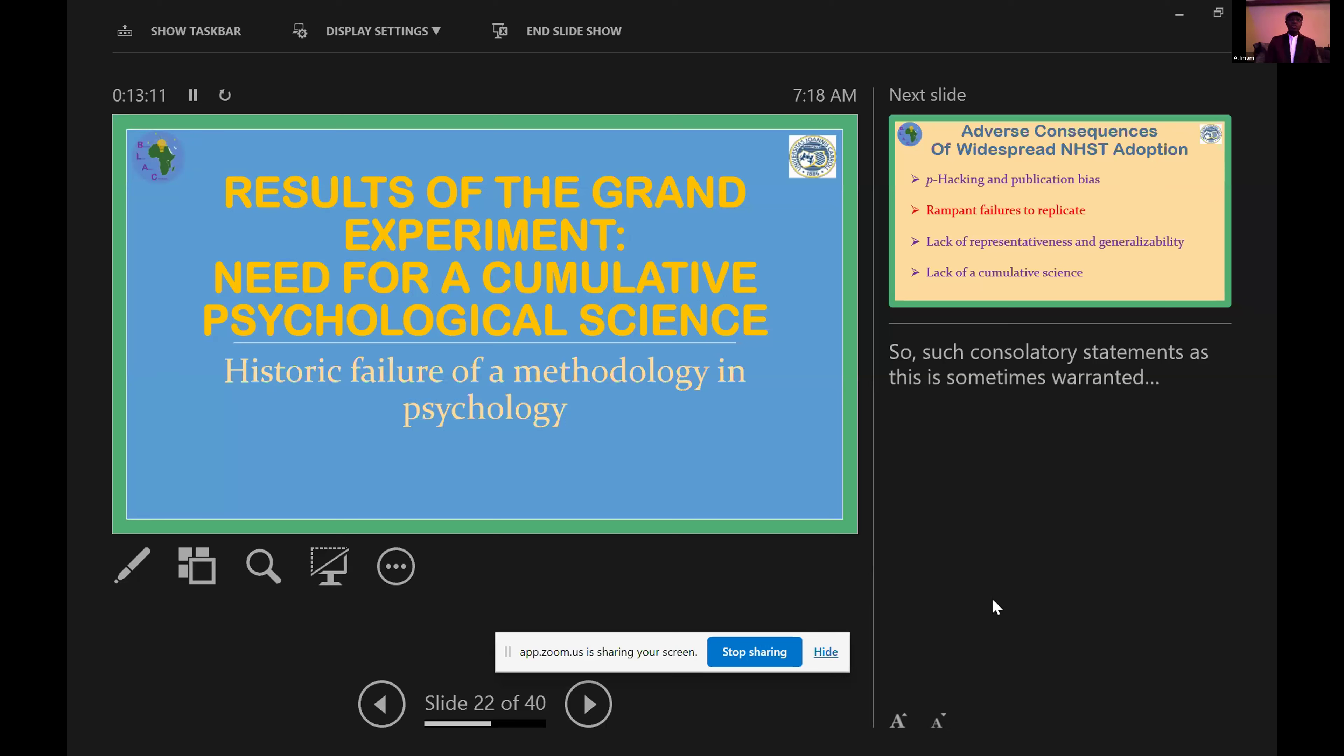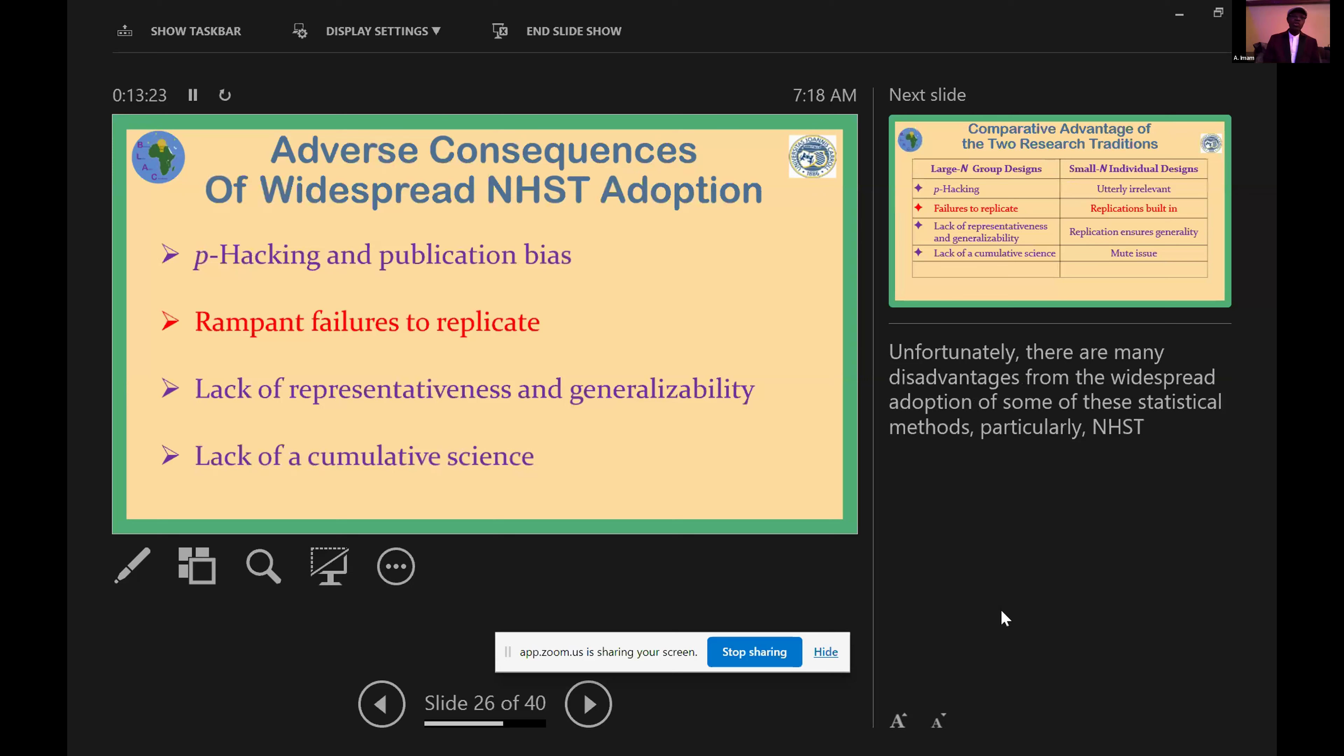I'm going to skip a lot of slides to get to the results so that in the interest of time I'll be able to get to my alternative proposal. The results showed that there are adverse consequences of widespread NHST adoption in psychological research, including p-hacking and publication bias, rampant failures of replication, lack of representativeness and generalizability, and of course lack of cumulative science.